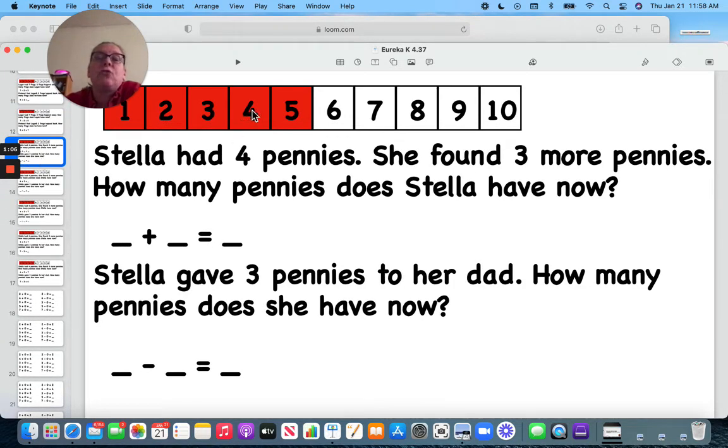Stella has four pennies, and she found three more. One, two, three. Four plus three is, what did we get? One, two, three. Seven.